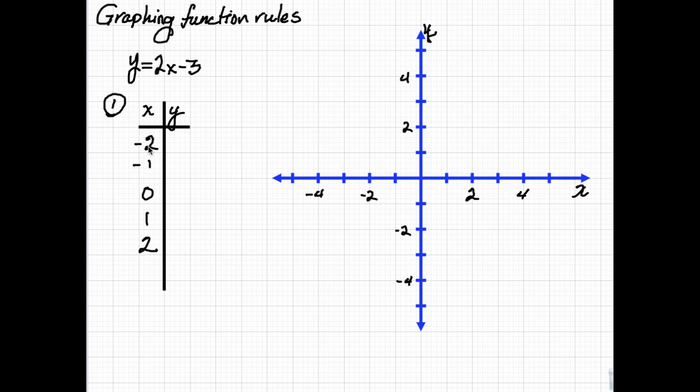Then we plug or substitute each one of these x variables into the equation, find out what y is, and then we've got our x-y pair. So let's do that. First one will be 2 times negative 2 minus 3. That's negative 4 minus 3, that's negative 7. This one will be 2 times negative 1 minus 3. That's negative 2 minus 3, that's negative 5. And let's complete the other ones.